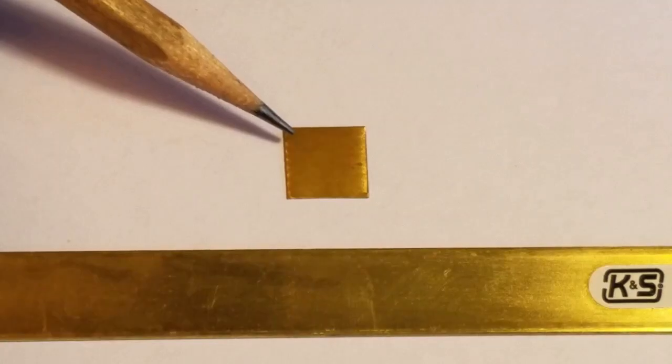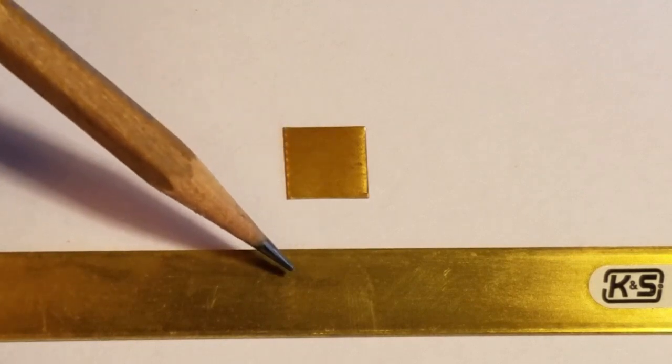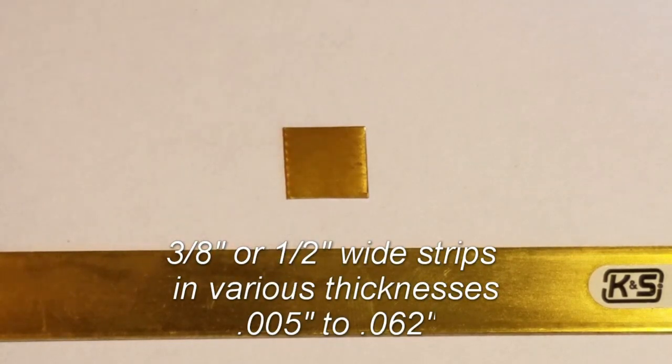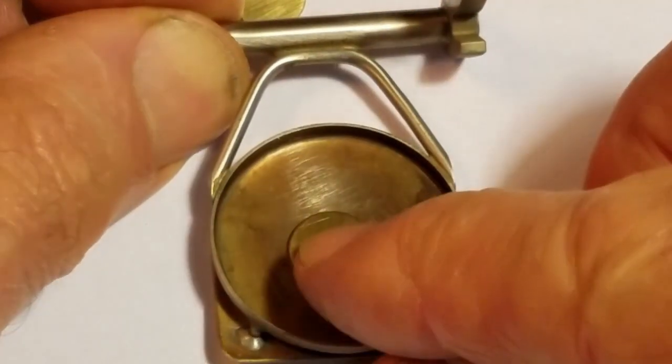You can cut the spacers from sheet metal or brass strips in various thicknesses available from hobby shops and supply houses. Or you can use a thin washer.